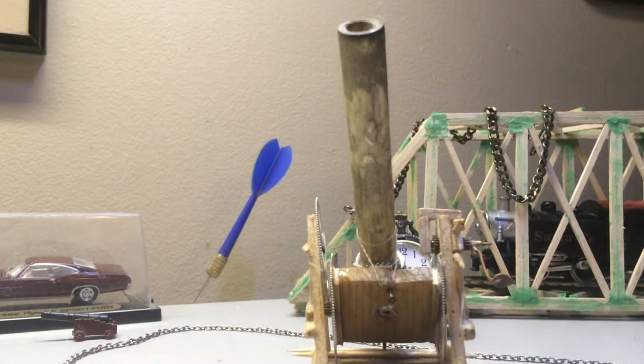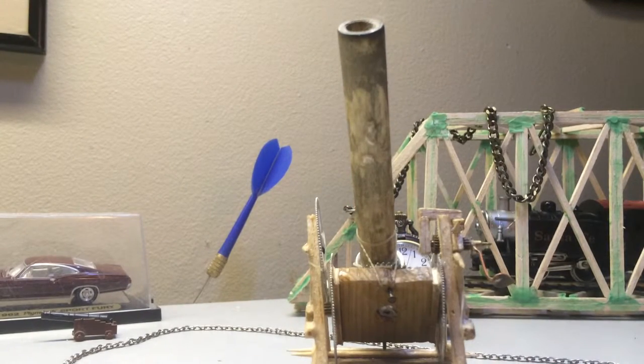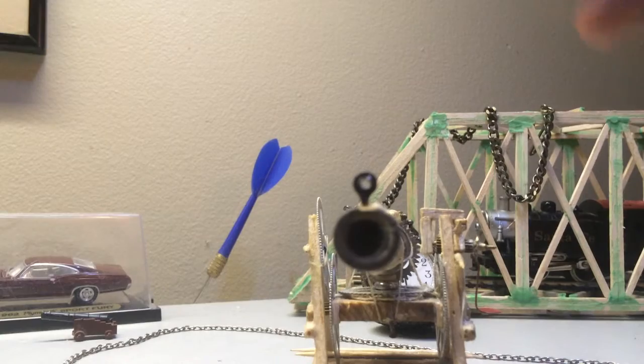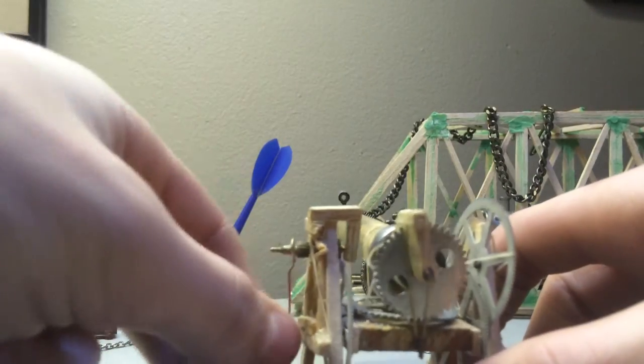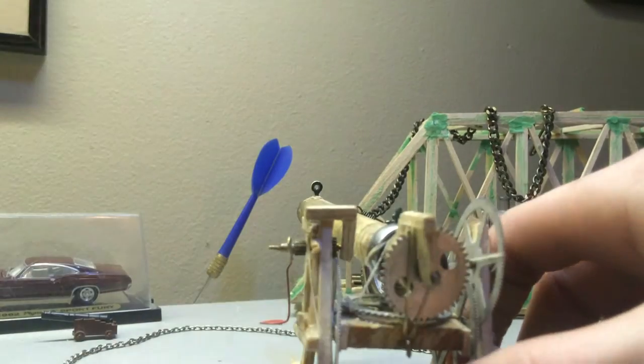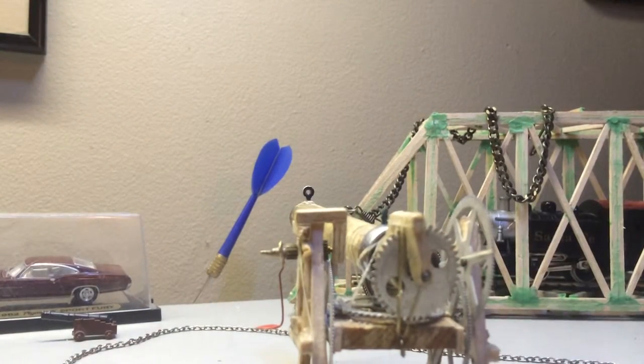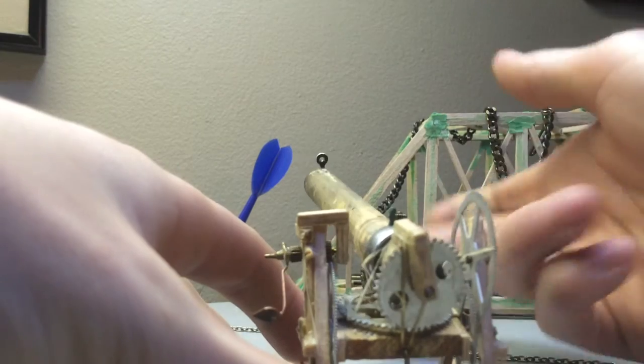Since it's not a real cannon, I don't need to wet a cloth on a stick and shove it down there so it doesn't explode. Next, I would just put in the little wick in the back, aim, light, and then you don't need to run because the only thing it's going to do is that.